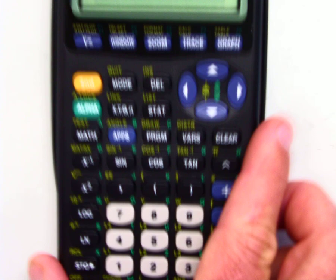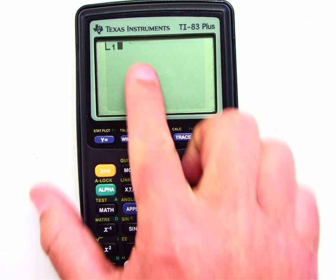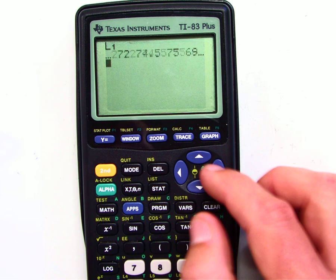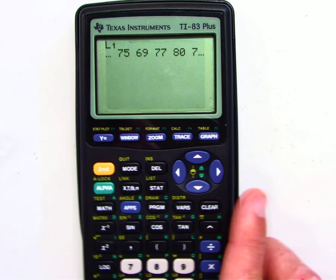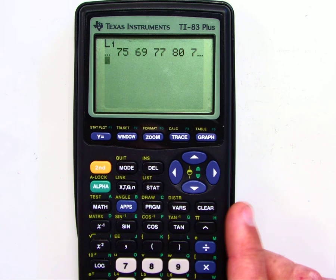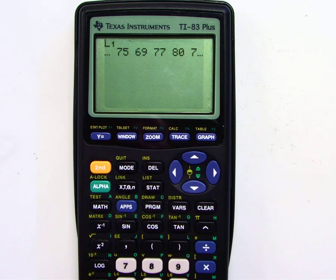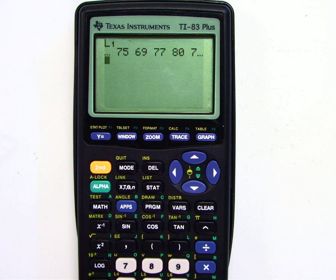What that does is it puts L1 here, and if I just hit enter, it will display the list in a horizontal fashion. So that is list one, that is the heights that the rest of the tutorial videos, I'm going to use this list right here to do multiple tasks. Thank you.